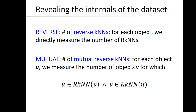Once we have built the near-neighbor graph, we work with two centrality measures. First, the number of reverse near-neighbors of each object — that is, the number of objects for which u is among its k nearest neighbors. Second, the number of mutual near-neighbors — that is, the number of objects b for which u is in the set of nearest neighbors of b and b is in the set of near-neighbors of u.